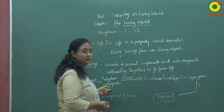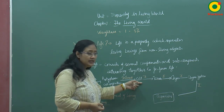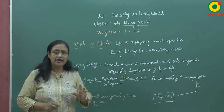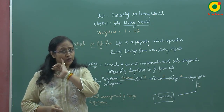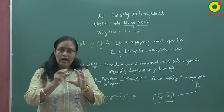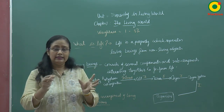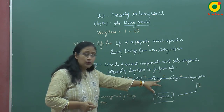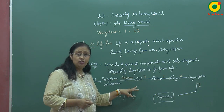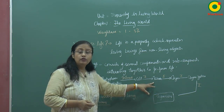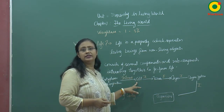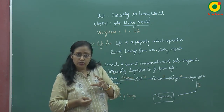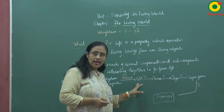Cell arises due to the interaction of protoplasm and different cell organelles present inside the cell. Cytoplasm and nucleus together are known as protoplasm, and the interactions of protoplasm and cell organelles give rise to the cell. Similarly, cells are not the constituent of tissues, but tissues are formed by the interactions of cells present in the tissue. A tissue is a group of cells; several cells interact together and form the tissue.